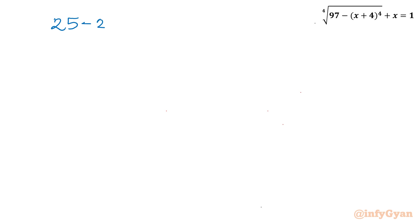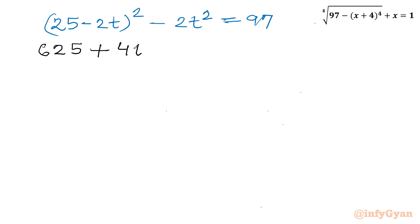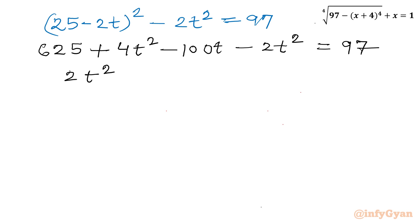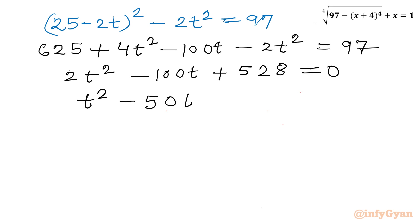Let's expand and solve: (25 minus 2T) whole squared minus 2T squared equal to 97. Applying the formula: 625 minus 100T plus 4T squared minus 2T squared equal to 97. Simplifying: 2T squared minus 100T plus 625 minus 97 equal to 0, which gives 2T squared minus 100T plus 528 equal to 0. Dividing by 2: T squared minus 50T plus 264 equal to 0.